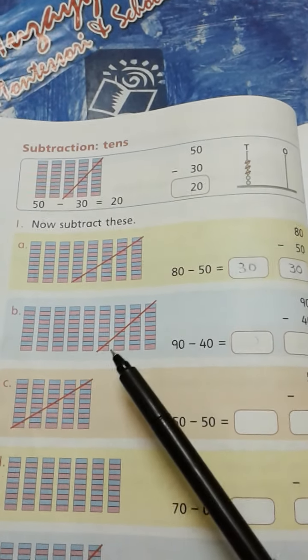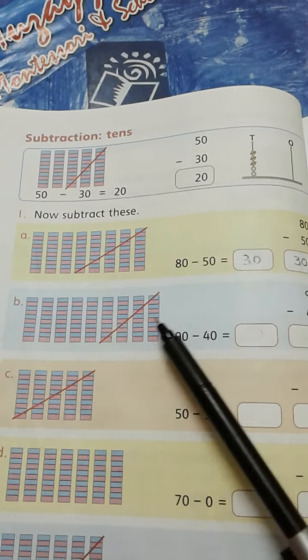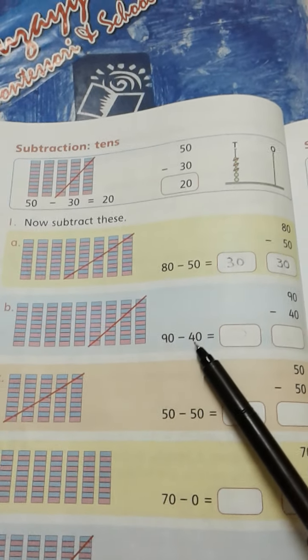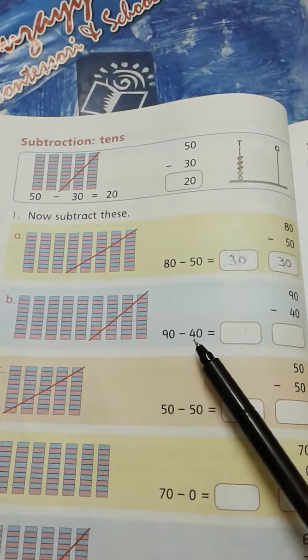Now how many tens do we have to subtract? Let's count: 1, 2, 3, 4. So 4 tens means 40. This means we have to subtract 40 from 90, we have to subtract 4 tens.